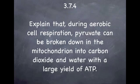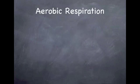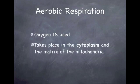During aerobic cell respiration, pyruvate can be broken down in the mitochondrion into carbon dioxide and water with a large yield of ATP. In contrast to anaerobic respiration, aerobic respiration does use oxygen, and this time it takes place in both the cytoplasm and the matrix of the mitochondrion.